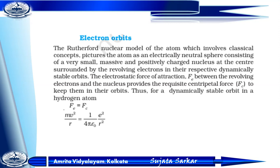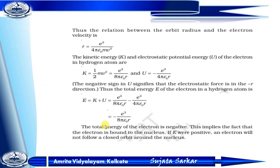For a stable orbit in the hydrogen atom, Fe equals Fc (centripetal force). The force of attraction Fe is equivalent to mv² / r, and the centripetal force equals e² / (4πε₀r²). From this equation we can calculate the orbital radius: r = e² / (4πε₀mv²).